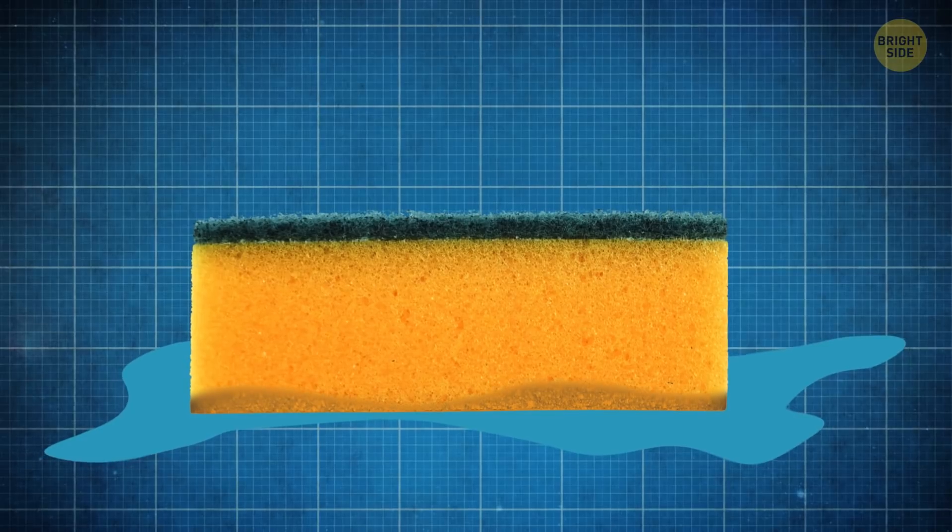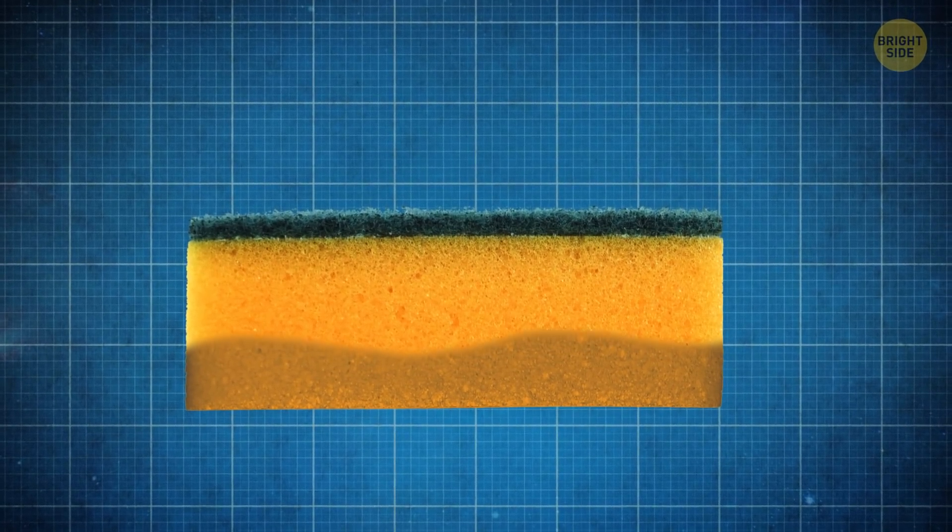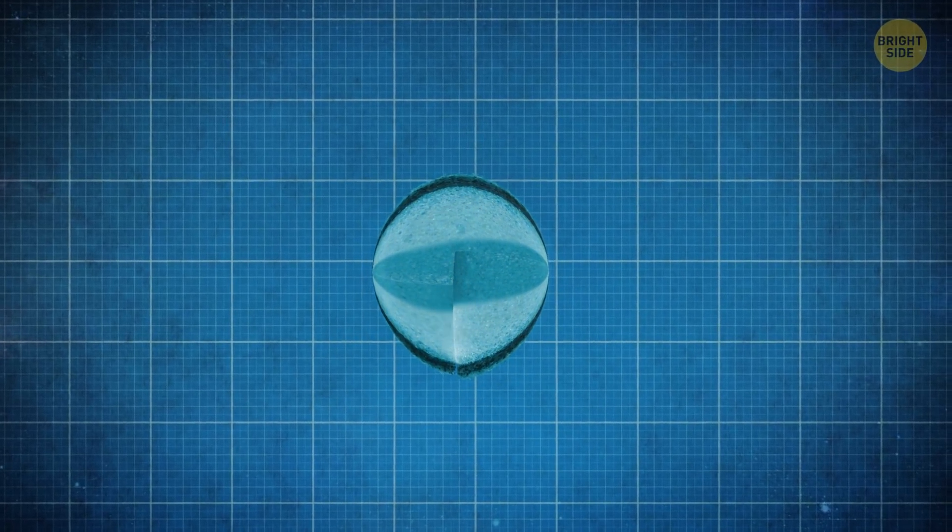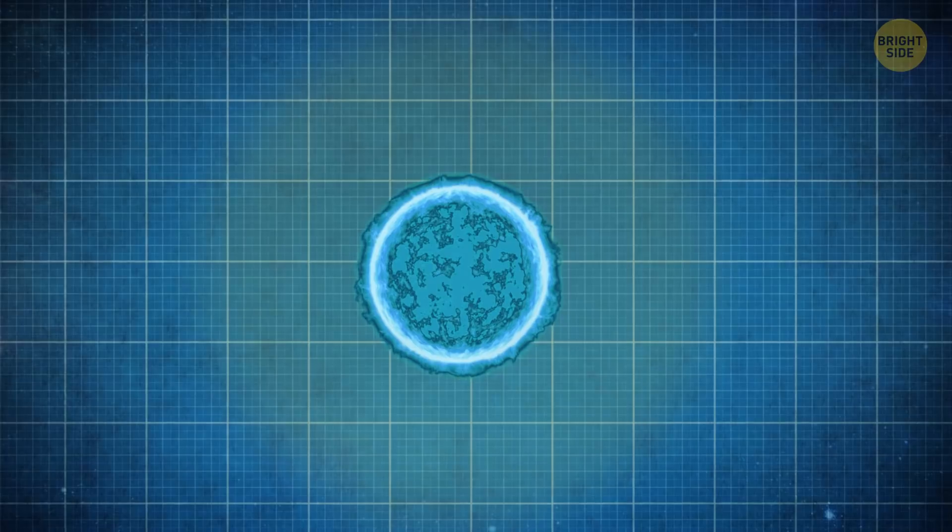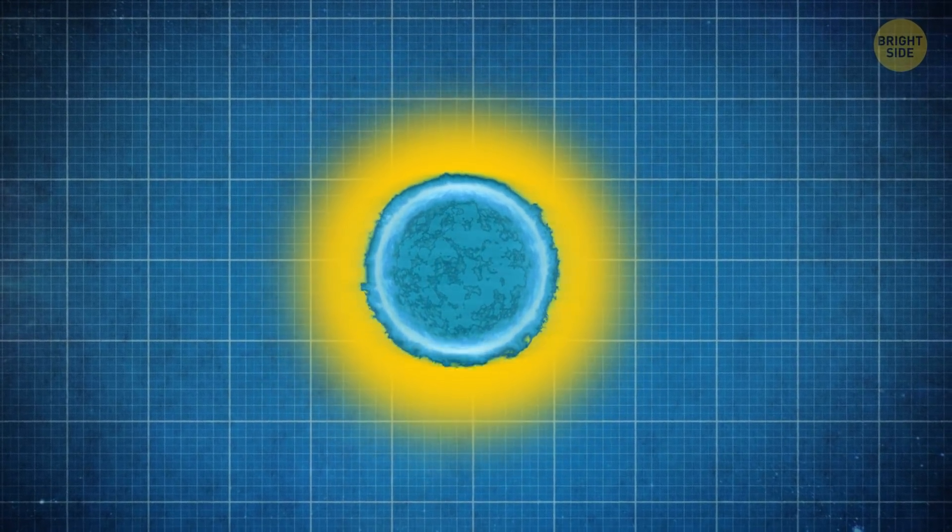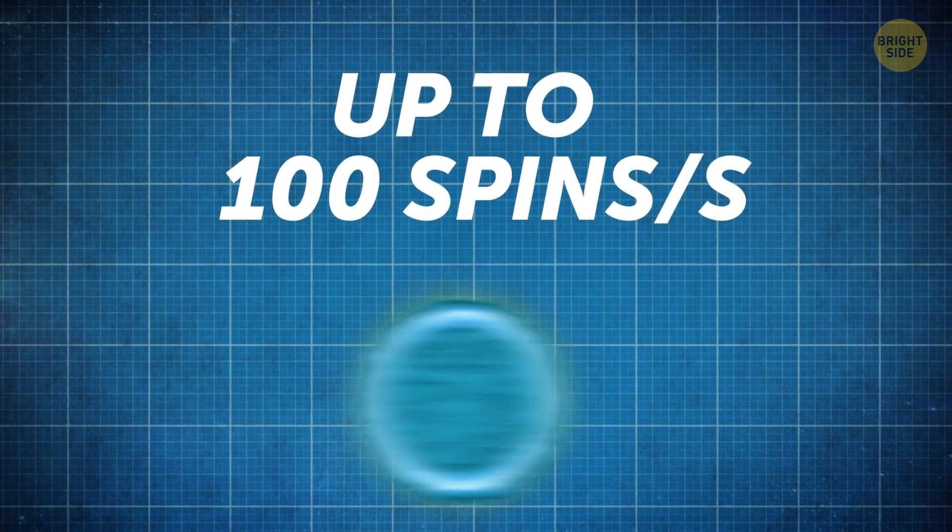Now, imagine putting a sponge in a small puddle of water. The water will fill the hollows in the sponge and disappear in no time. Neutron stars work sort of the same way. As soon as they get hold of some stray matter, they immediately suck it up like a sponge. And this can increase the speed of their rotation by up to 100 spins a second.